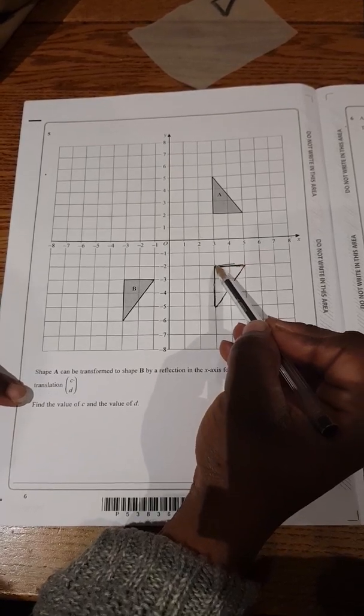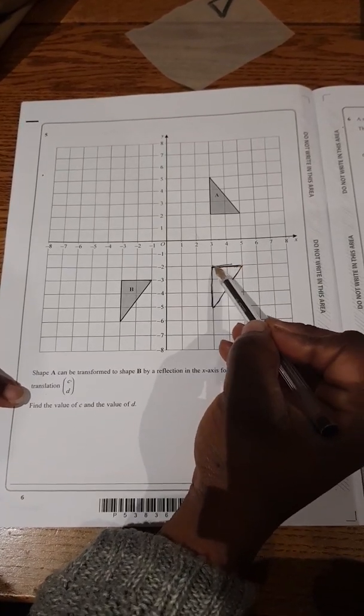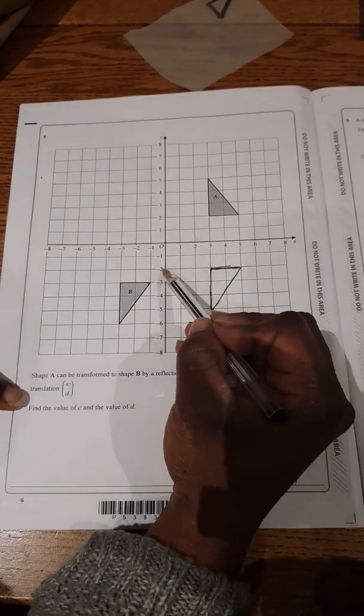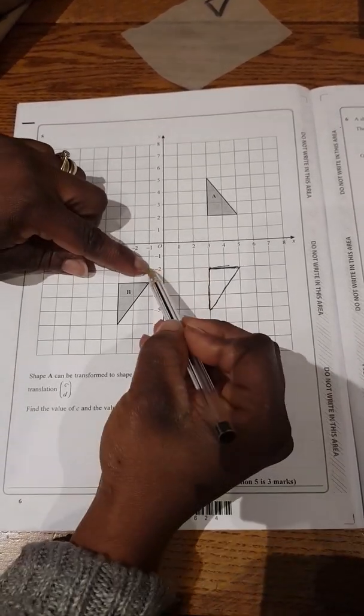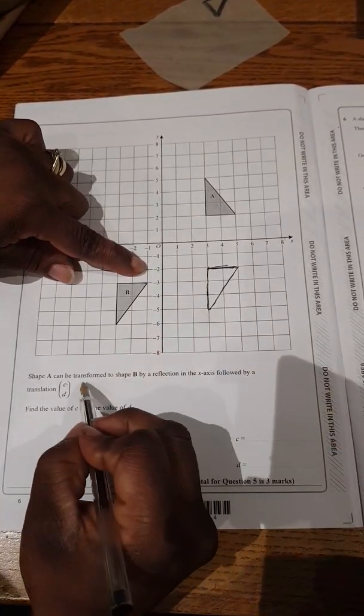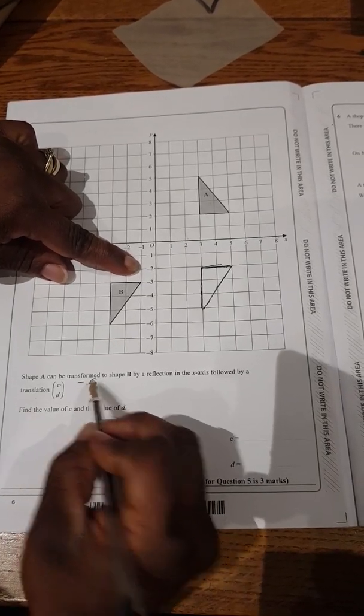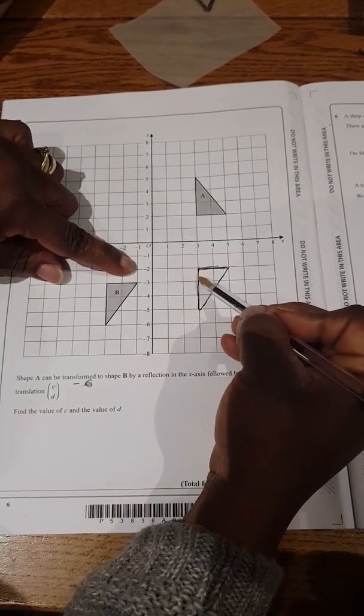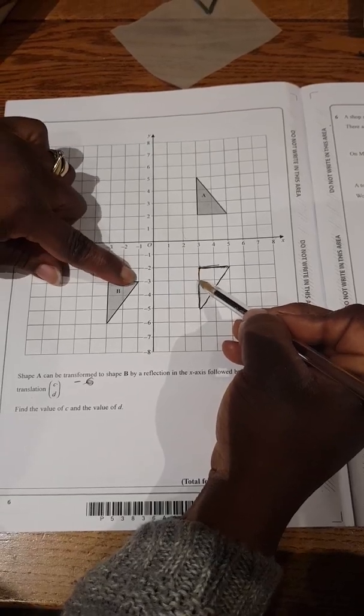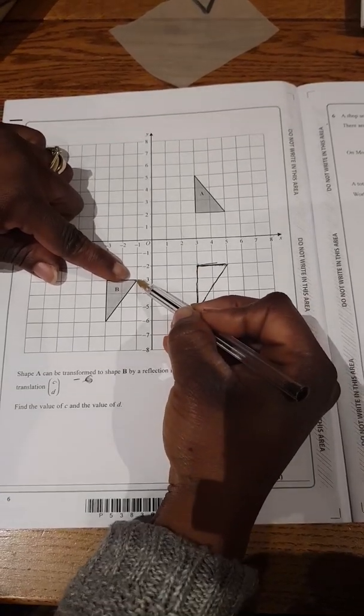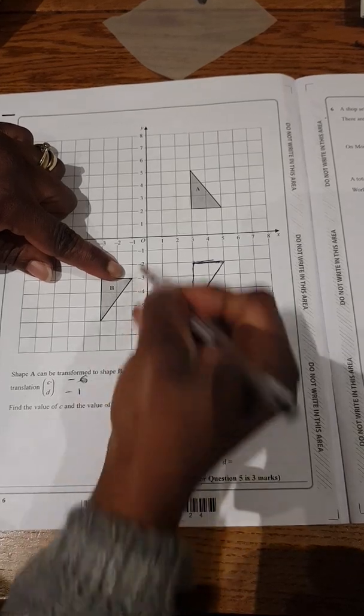So if we have to move from here, 1, 2, 3, 4, 5, 6, we've moved 6 times to the left, which is on the x-axis. So that will be negative 6 for the C. And we've moved 1 downwards to get to this point, which is negative 1 for the y-axis.